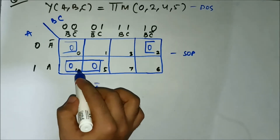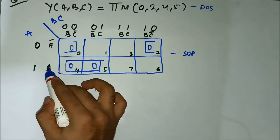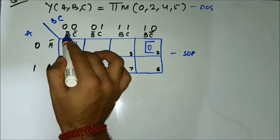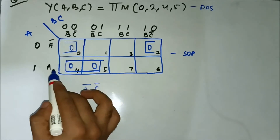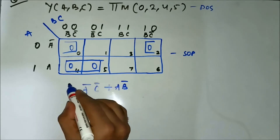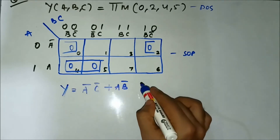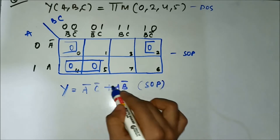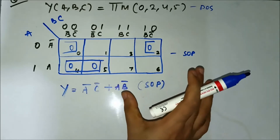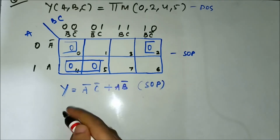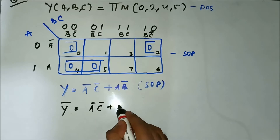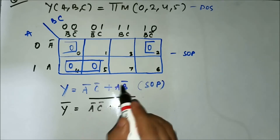Next, for this second pair: A is common in the horizontal side, and in the vertical side we have B̅ common. Here also B̅, here also B̅, and A in the horizontal side. So it is AB̅. If you notice this expression, it is SOP form — sum of product terms. These are product terms and they are all summed together.